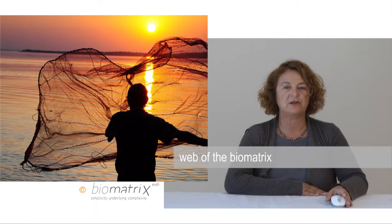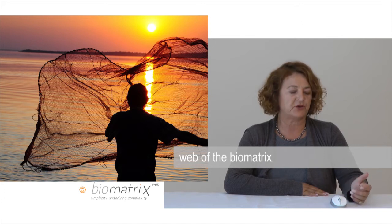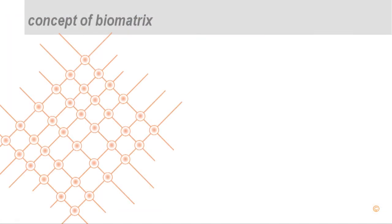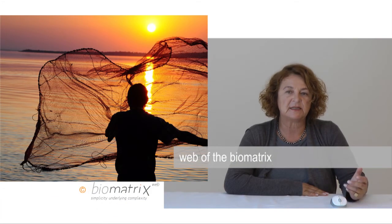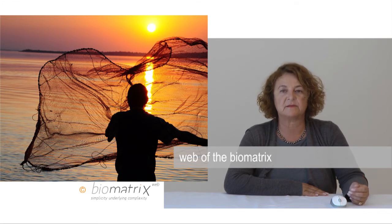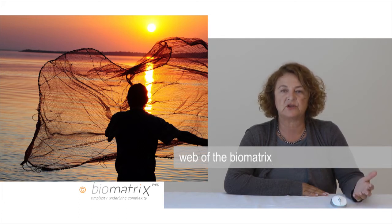Let us discuss now the concepts of biometrics systems theory. The first concept is that of the biometrics. Biometrics is the term we use to represent the web of life. The web of life is a very well-known concept in ecology and it describes the interaction between the different systems of life — the different interactions of species like animals, plants, micro-organisms with each other and with their physical environment like water, soil, light, territory, etc.